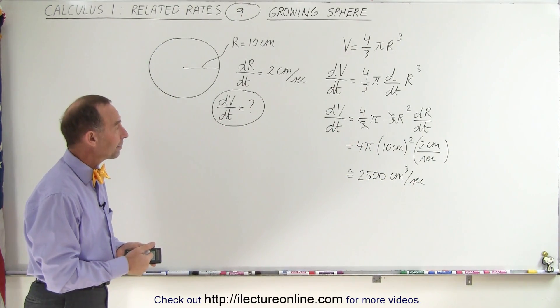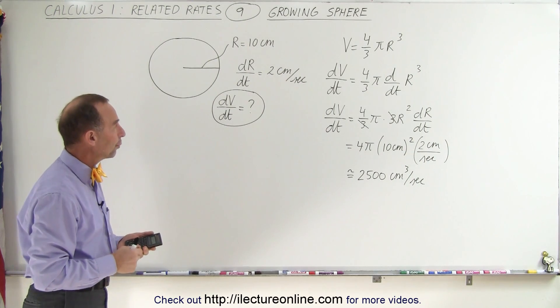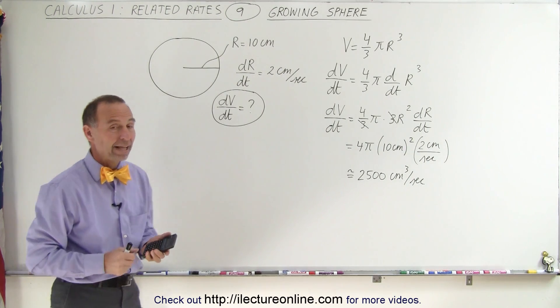So that's how we can tell the rate of change of the volume with respect to time if we're given the rate of change of the radius with respect to time. And that's how it's done.